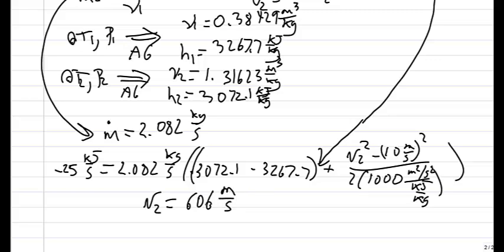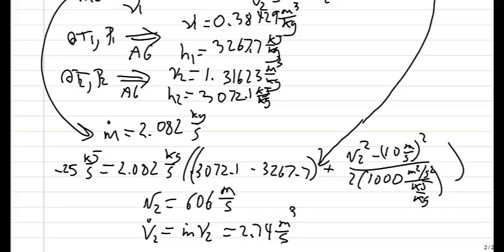Finally, the volumetric flow rate at the exit is the mass flow rate times the specific volume at state 2. Plugging in these numbers, we obtain a volumetric flow rate of 2.74 cubic meters per second. The problem is done.